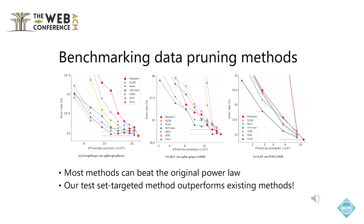We apply these state-of-the-art data pruning methods on these three graphs for gaining insights into data pruning in node classification tasks. In all the settings, there exist data pruning methods that can beat random pruning, that is, beating the original power law scaling.